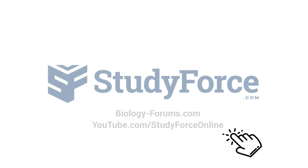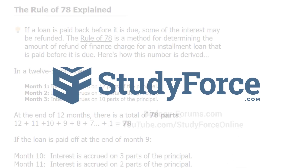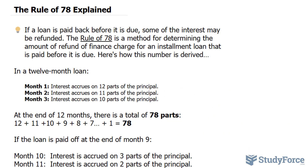In this lesson, I'll explain to you what is meant by the Rule of 78. Now if a loan is paid back before its due date, some of the interest may be refunded. The Rule of 78 is a method for determining the amount of refund of finance charged for an installment loan that is paid before it's due. And here's how it's derived.